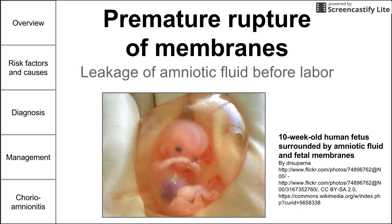This is a brief video on premature rupture of membranes, or the leakage of amniotic fluid before labor during pregnancy. We're going to cover an overview of PROM, risk factors and causes, how to diagnose it, management based on gestational age, and one complication — chorioamnionitis. This picture shows a 10-week-old human fetus surrounded by amniotic fluid and fetal membranes. If those fetal membranes were to rupture, that would be called premature rupture of membranes.